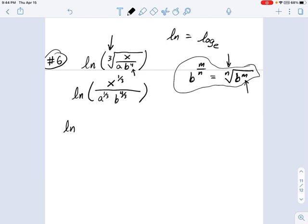This is natural log of x to the 1 third minus natural log of a to the 1 third minus natural log of b to the 4 thirds. Okay, and that's all done using, what do we have here? This is really the quotient rule.